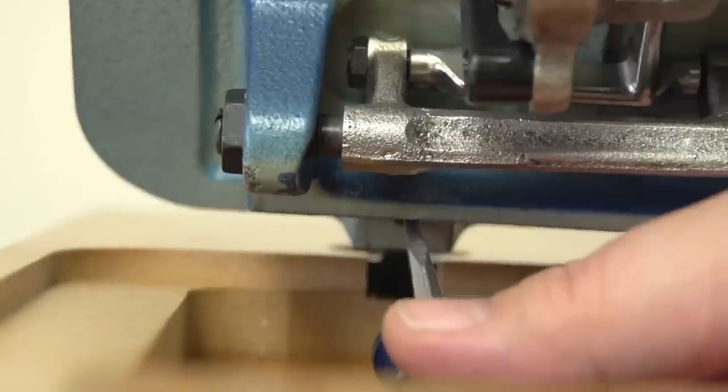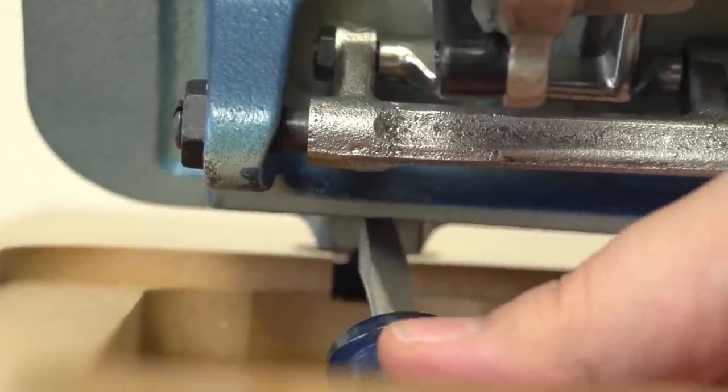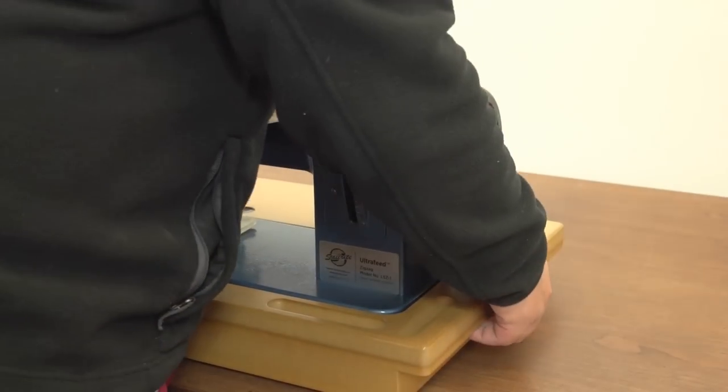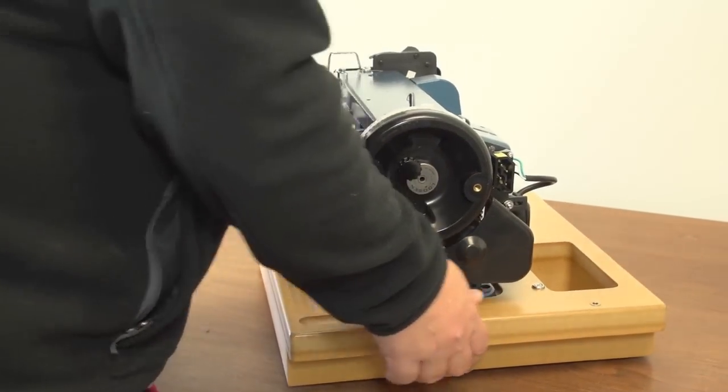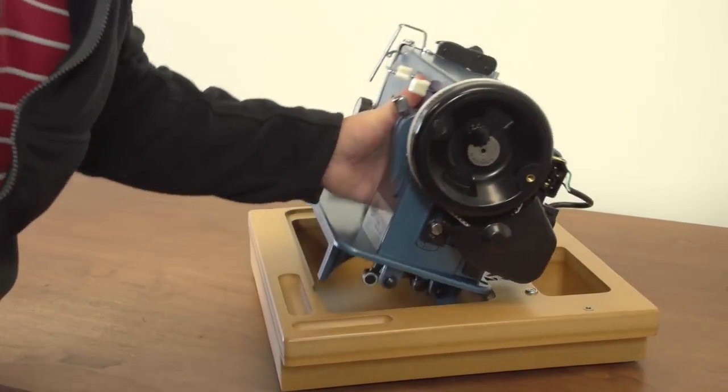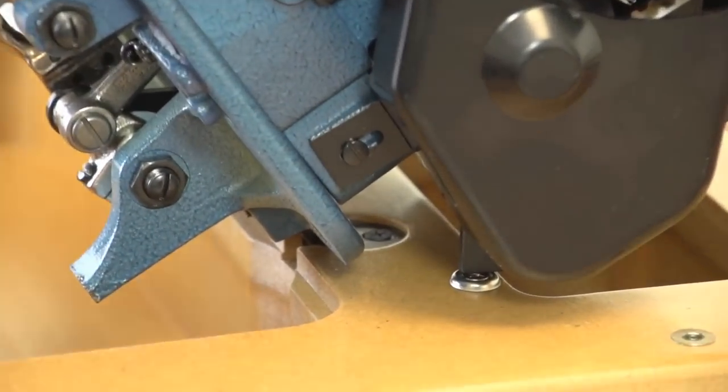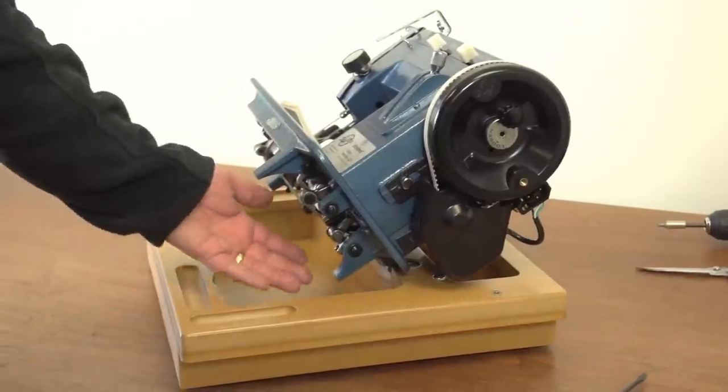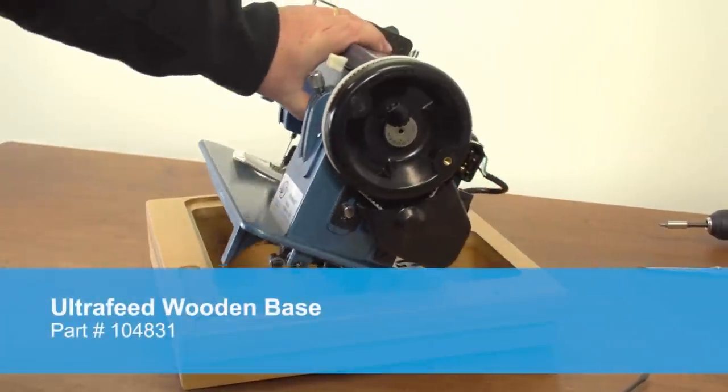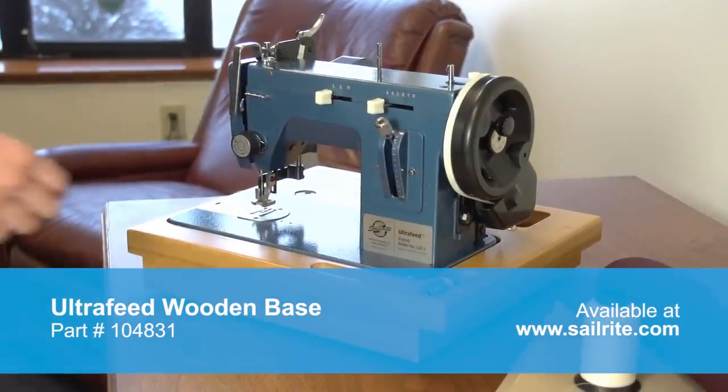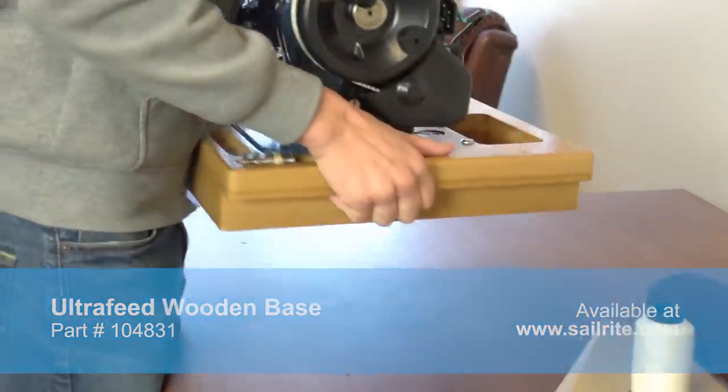Use a short stubby screwdriver with a medium head, not included, to tighten the set screws on each hinge post. This self supporting base is so sturdy there is no need for a kickstand. The machine balances perfectly so you can work underneath your machine easily. That's all there is to assembly of the Ultrafeed Wooden Base.